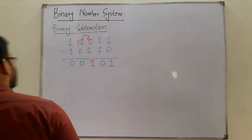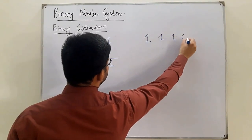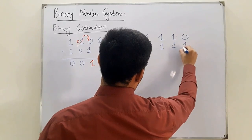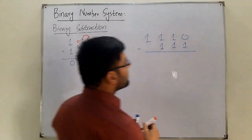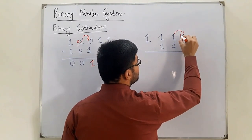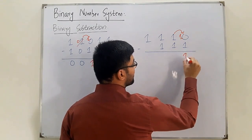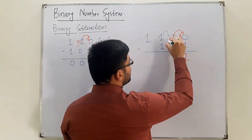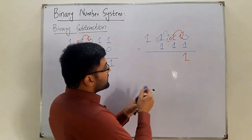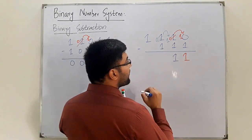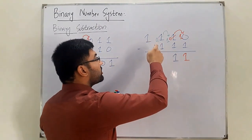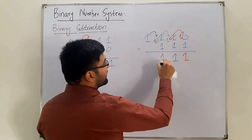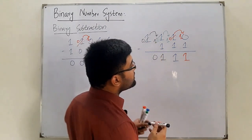Another subtraction example: 11101110 minus 111. Working right to left: 0 - 1 requires borrowing, making 10 - 1 = 1; the next position becomes 0, requiring another borrow, giving 10 - 0 = ... we borrow again making a 10; 1 - 1 = 1; with another borrow needed, 10 - 1 = 1; the remaining digit becomes 0, so the answer is 0111.